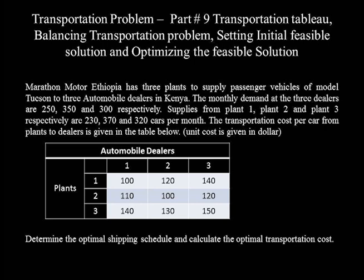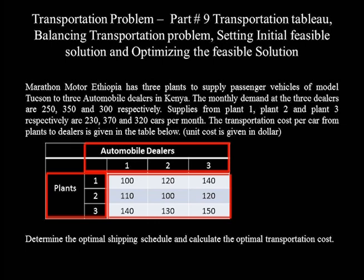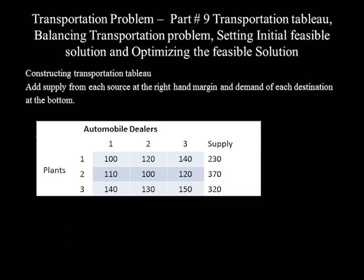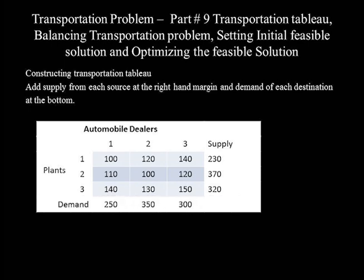The objective is to determine the optimal shipping schedule and calculate the optimal transportation cost. The cost matrix contains all three sources, all the destinations, and the unit transportation cost from source to destination. We can convert this cost matrix into a transportation tableau just by adding supply from each source at the right-hand margin corresponding to the source, and demand at each destination at the bottom margin of the tableau.